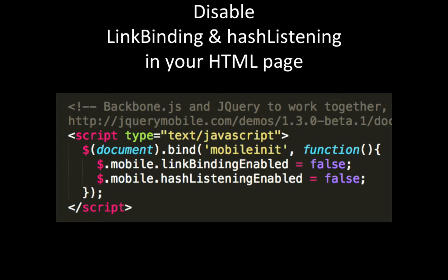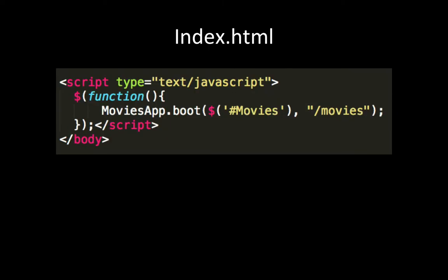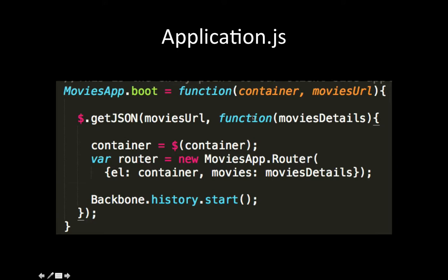You can do this in the mobile init event. The first starting point is index.html. We're going to call our application and tell it to call this endpoint and populate the data into a div with the id 'movies'. The application code takes in the container where the HTML should go and also takes in the endpoint where it should get the data from.